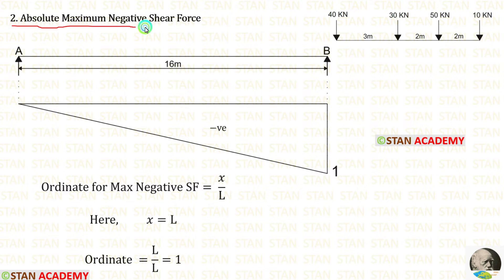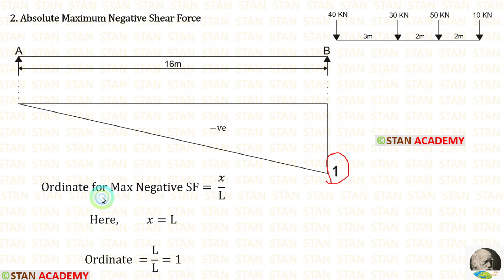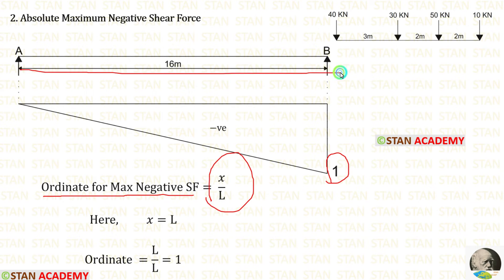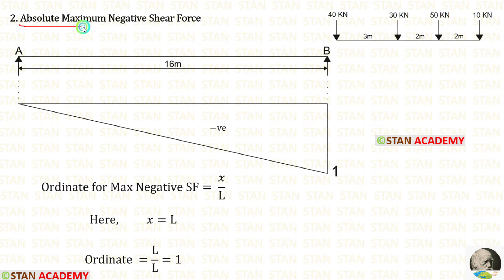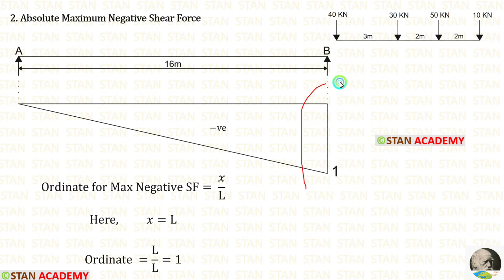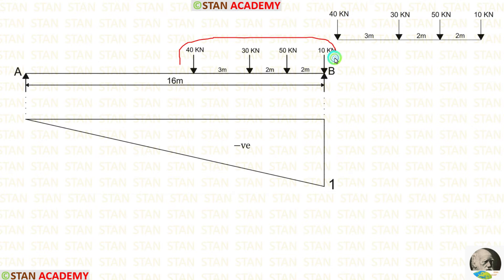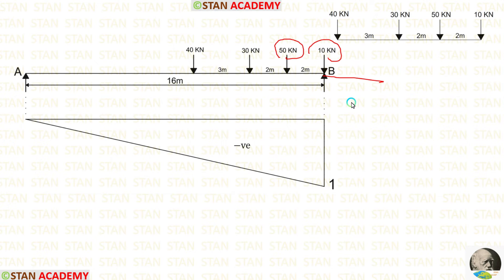Now let us calculate the absolute maximum negative shear force. For that we have to keep the maximum ordinate as 1 on the right side of the beam. The ordinate for maximum negative shear force is equal to x by L. Here x is equal to L, so L/L gives 1. For calculating the absolute maximum negative shear force, we have to keep these loads on the right of the beam because on the right we have the maximum ordinate. But in some cases, moving 1 or 2 loads to the right of B may increase the absolute maximum negative shear force.